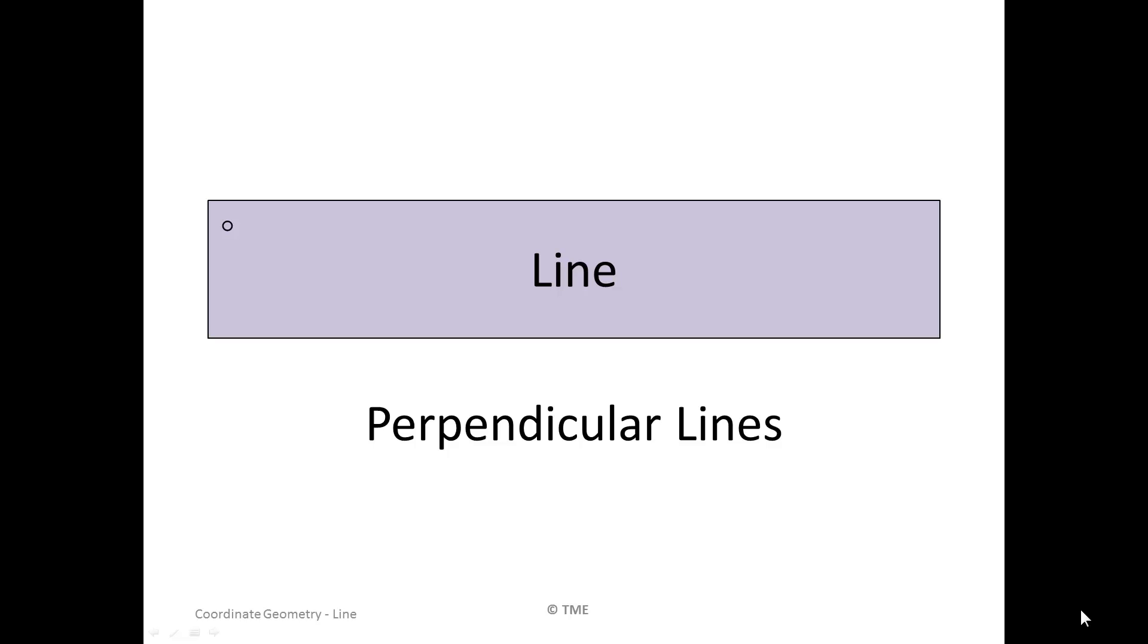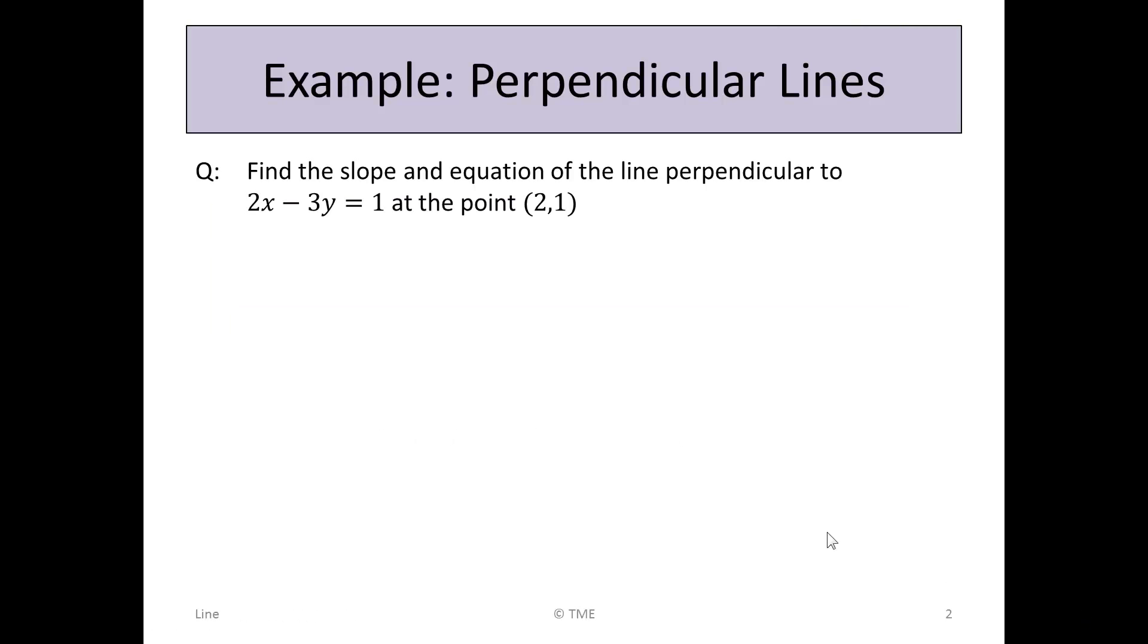Perpendicular lines. Find the slope and equation of the line perpendicular to 2x - 3y = 1 at the point (2, 1).